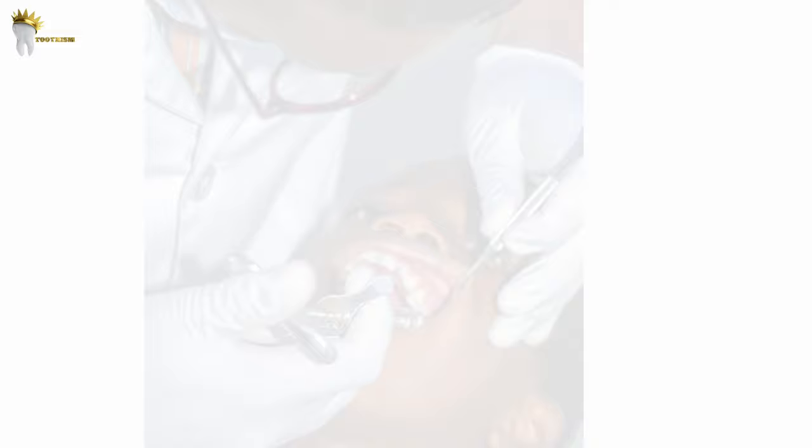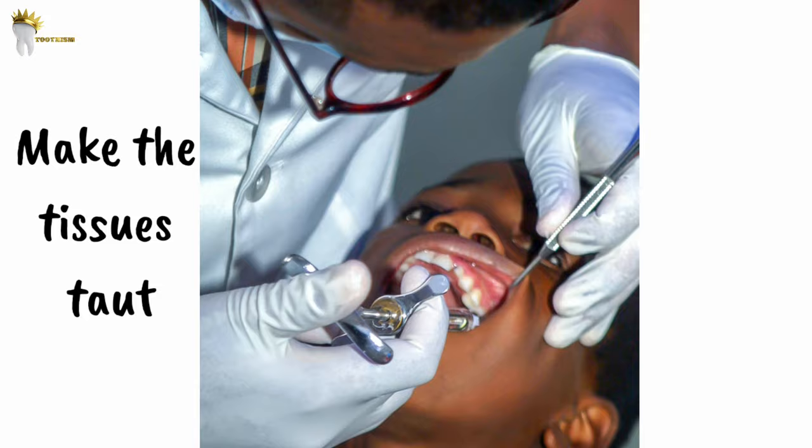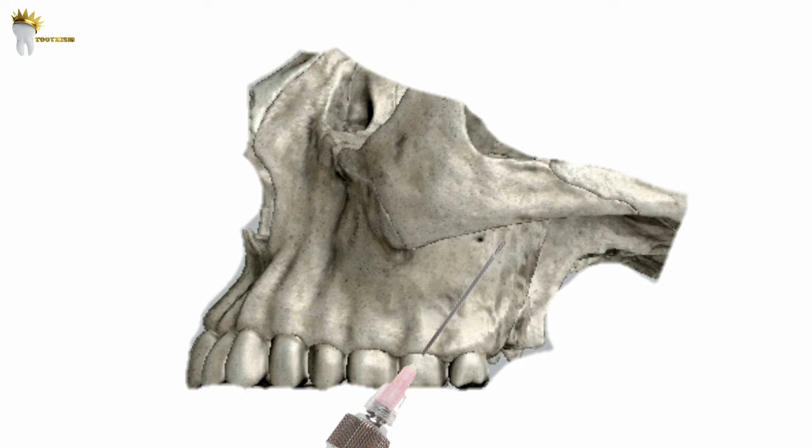The patient should be asked to partially open the mouth. The cheek should be retracted using a mouth mirror — it is better not to use your own finger, as this puts you at risk of needle-stick injury. Using the mouth mirror, pull the tissue so that the area of needle penetration is taut. The needle is then inserted at the height of the mucobuccal fold over the maxillary second molar.